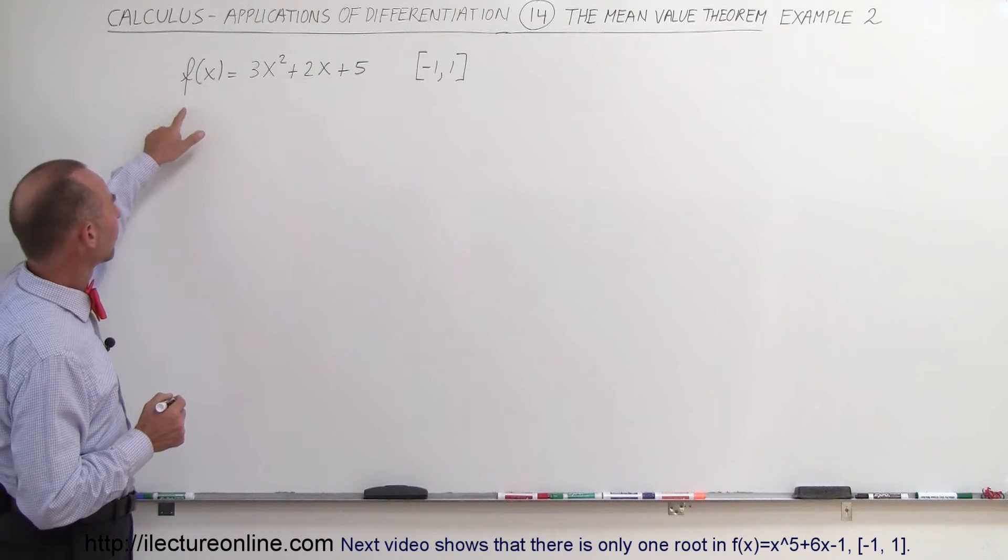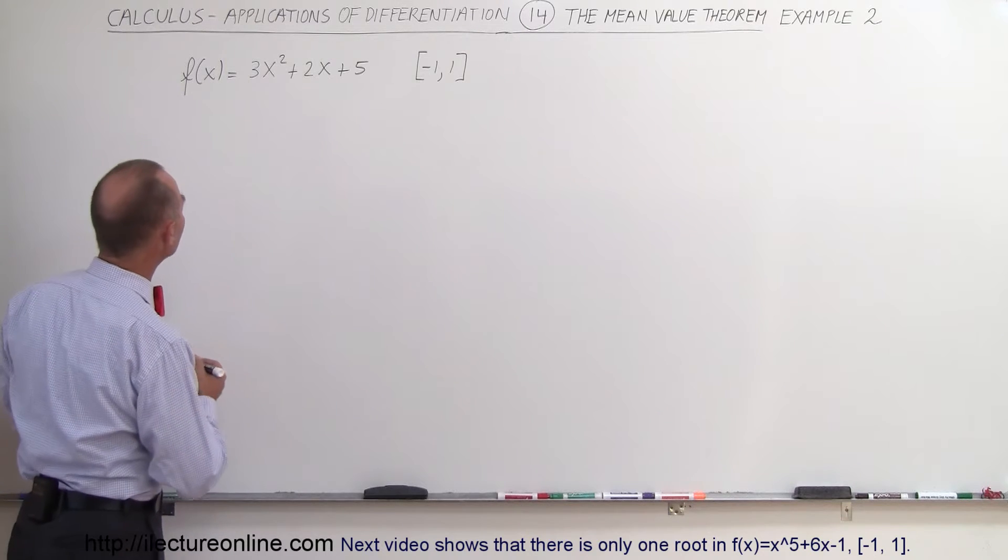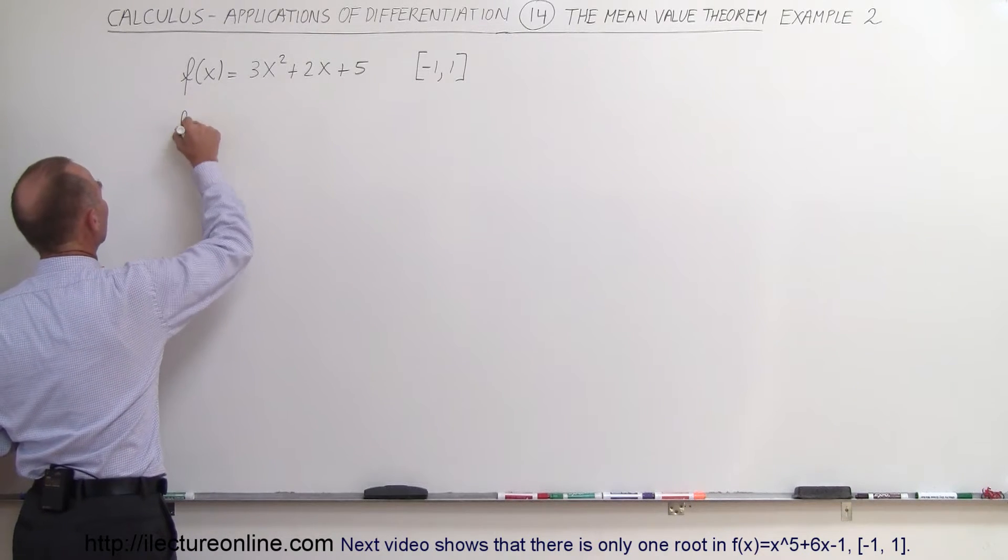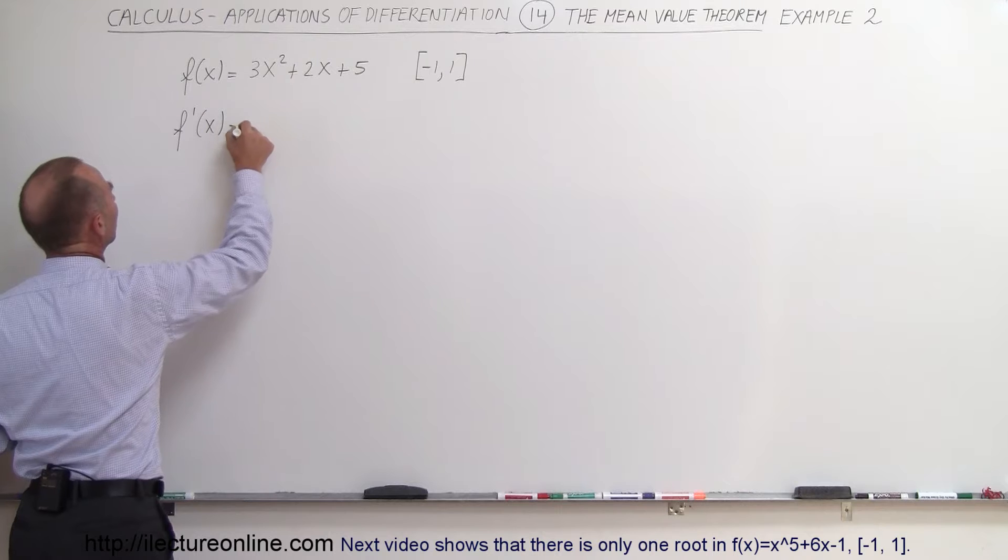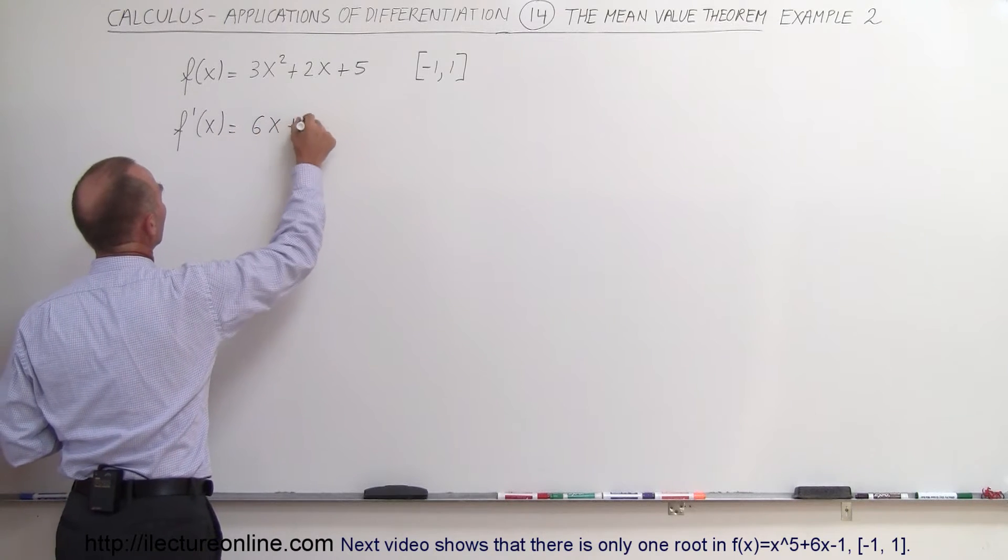So we have a function right here. Let's take the derivative, so the derivative would be f prime of x, and that is equal to 6x plus 2.